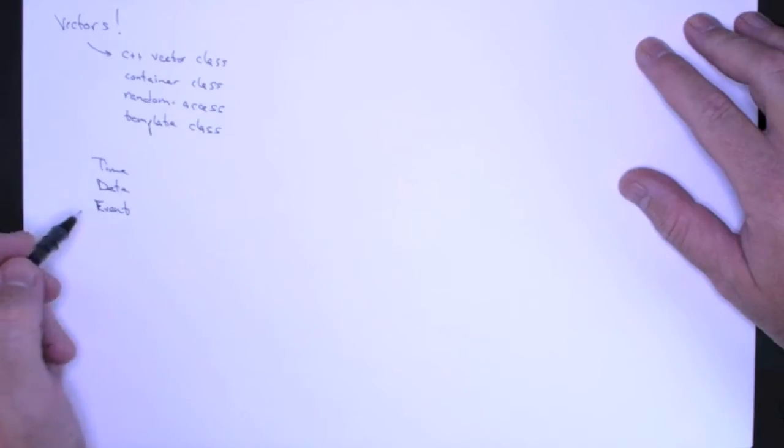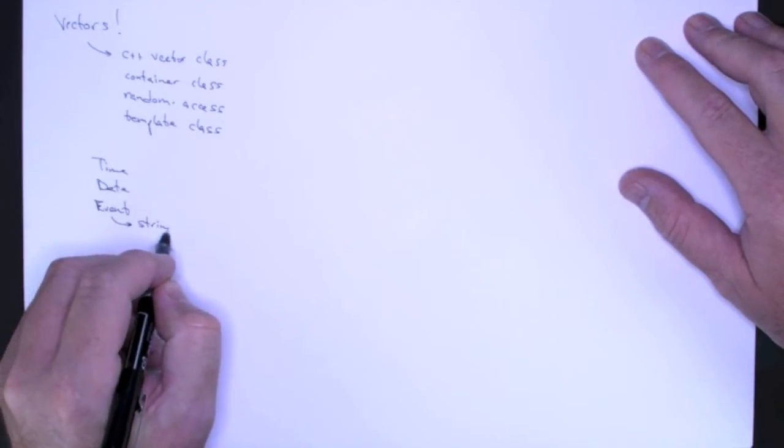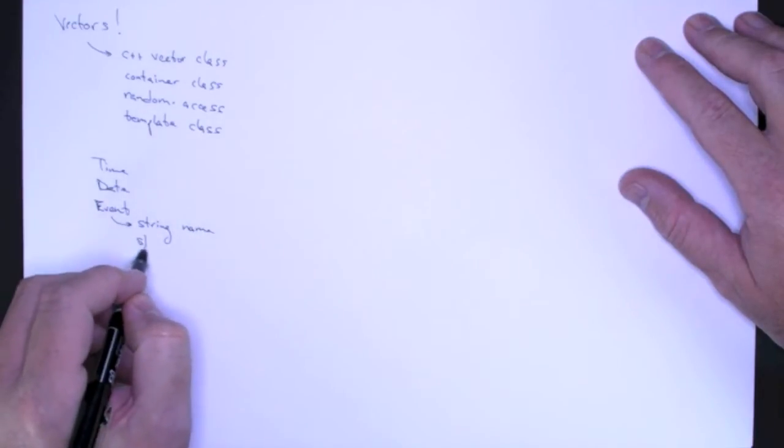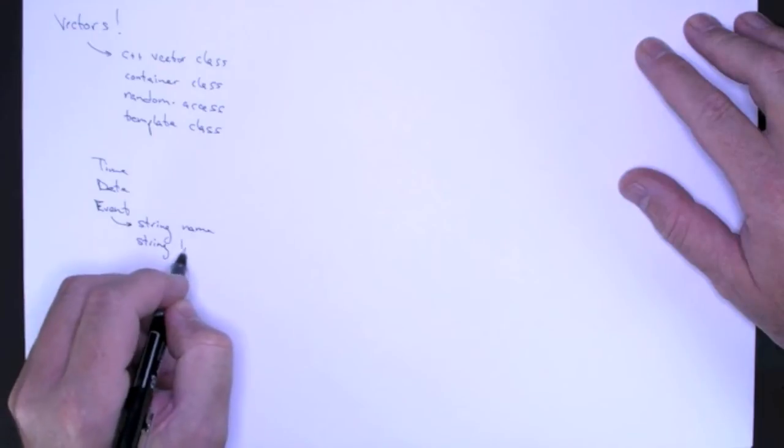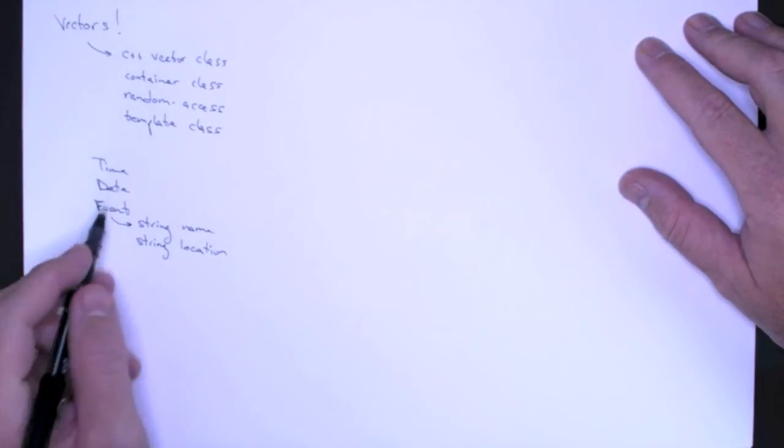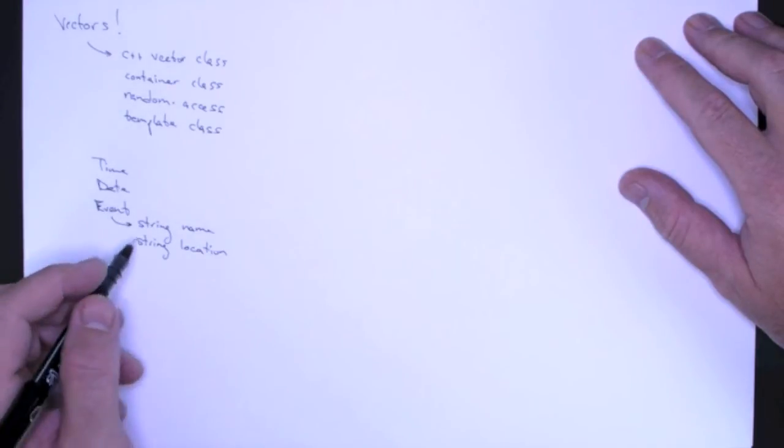If we have an event, maybe we use a string for its name, maybe we use a string for its location. And of course, events have dates and times, start time, end time.